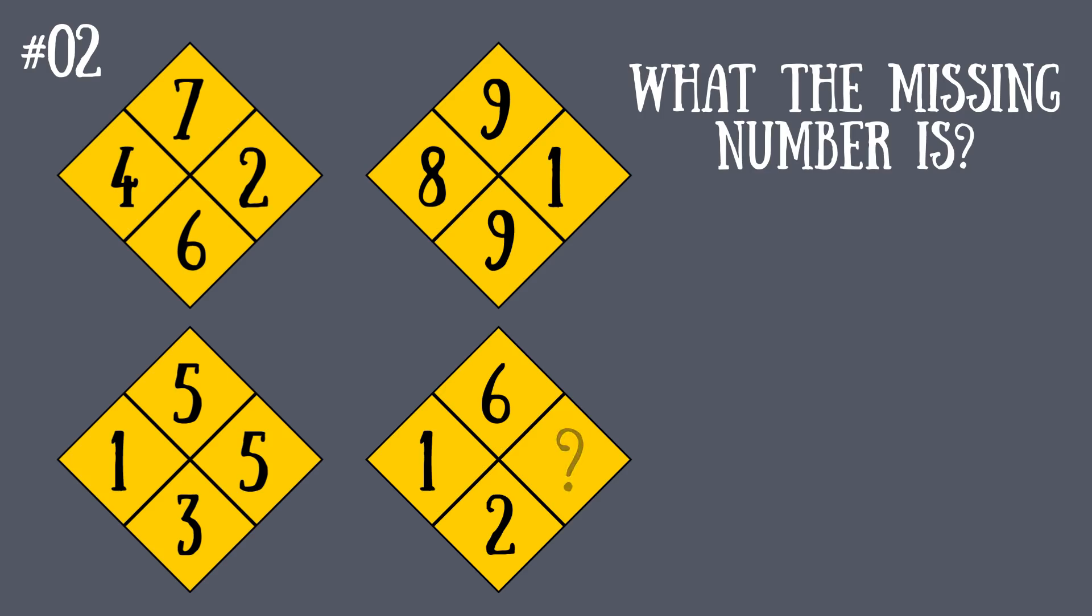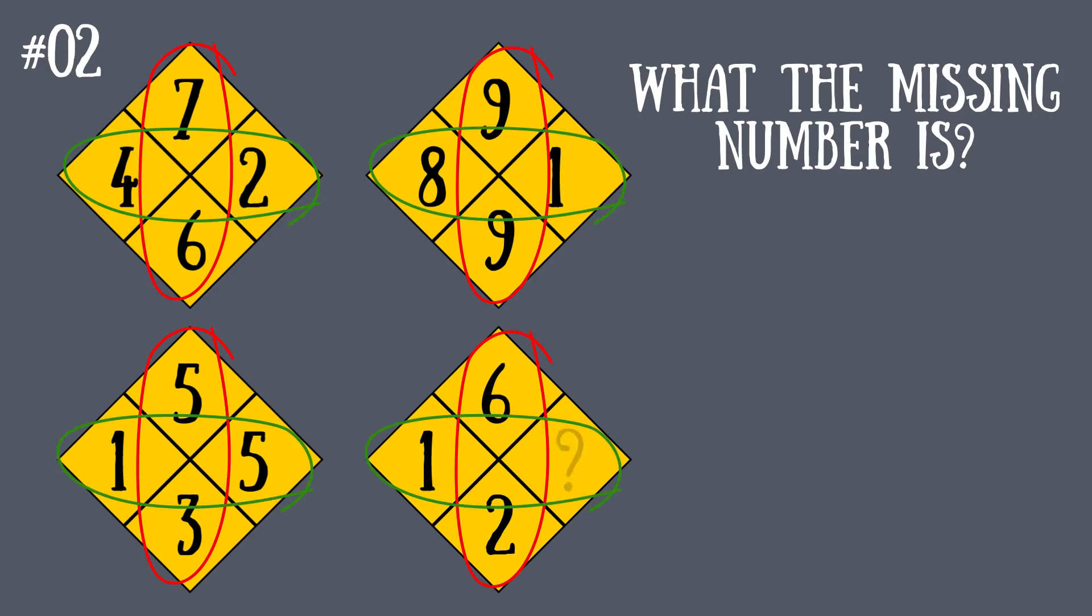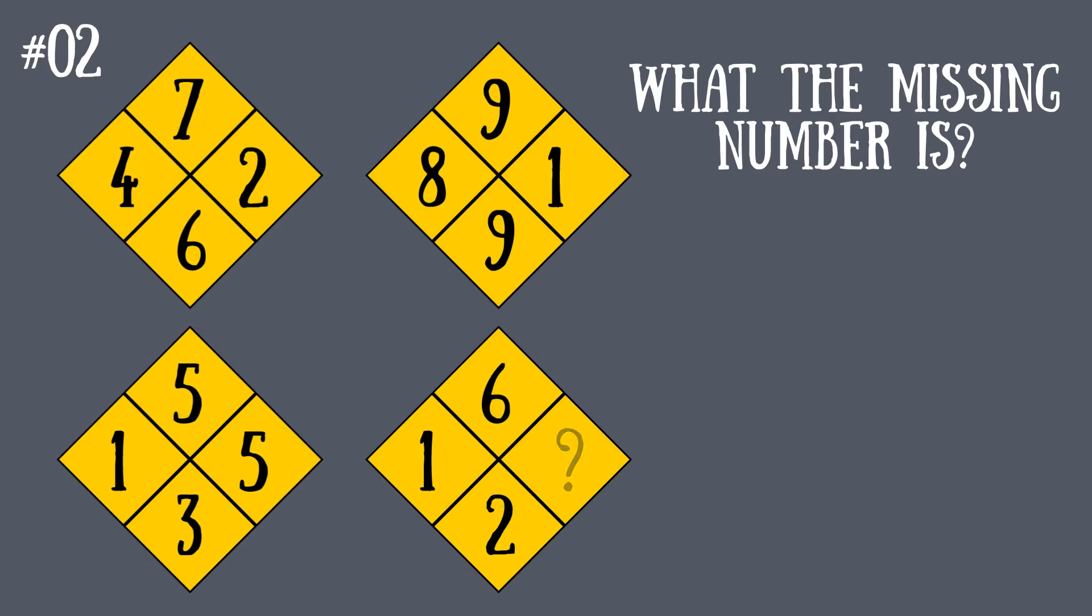Okay, so in each rhombus, multiplying the top number by the bottom one gives us the numbers on the left and right. For instance, in the first rhombus, 7 multiplied by 6 is 42, and that's exactly the number in the first rhombus. The same thing works for the other rhombuses.